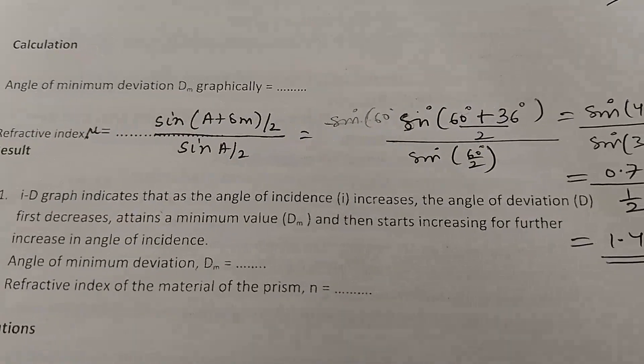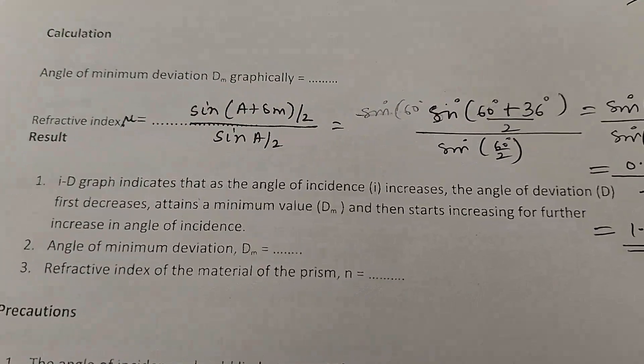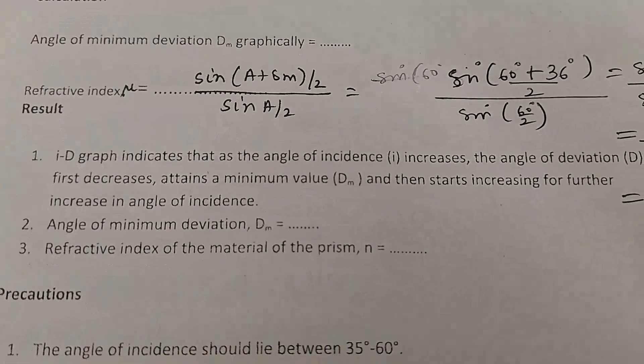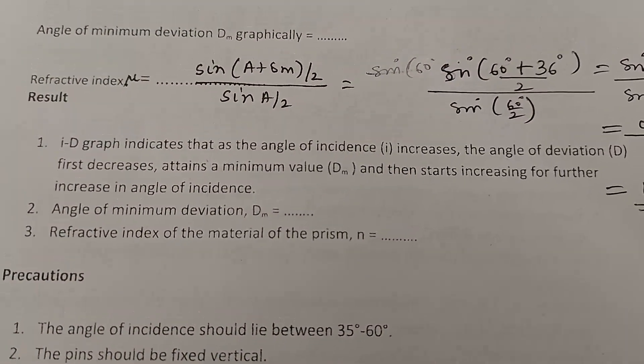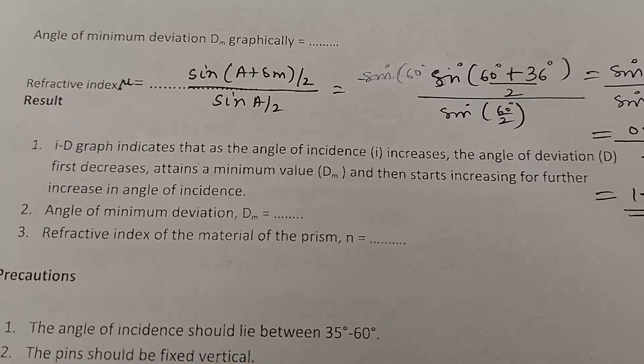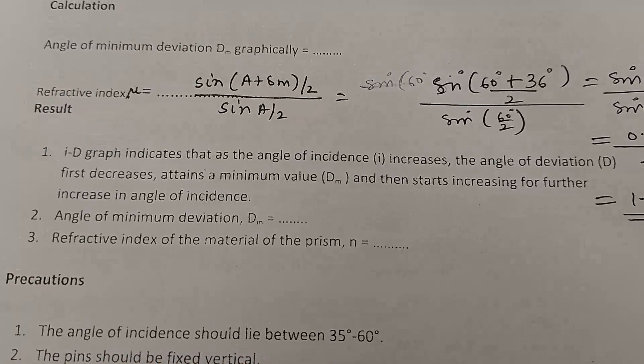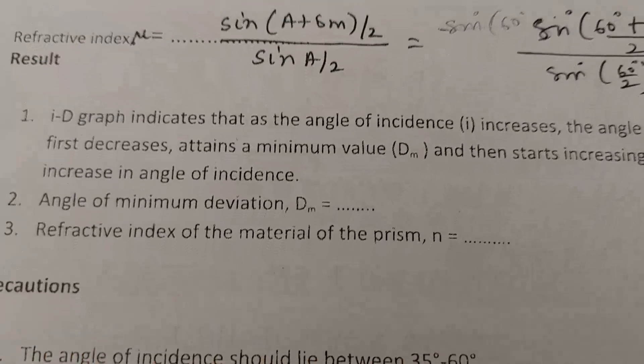Mention this in the result - how the graph shows. The graph indicates as the angle of incidence increases, the angle of deviation first decreases, then attains minimum value and starts increasing again.